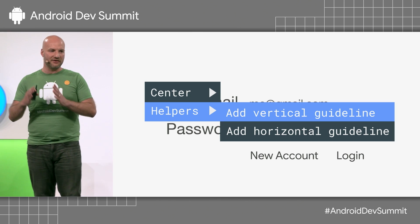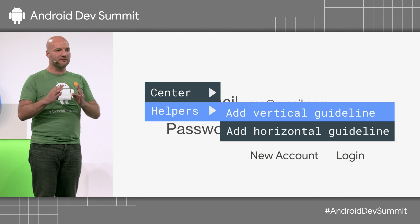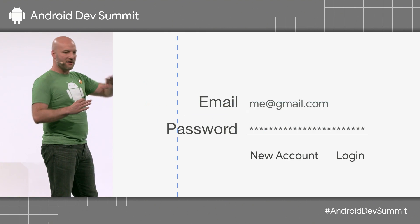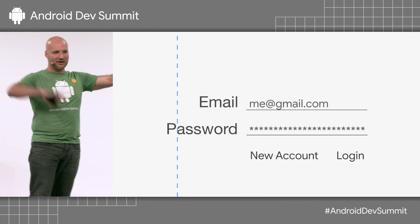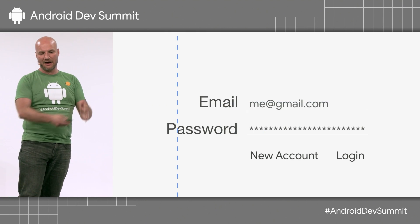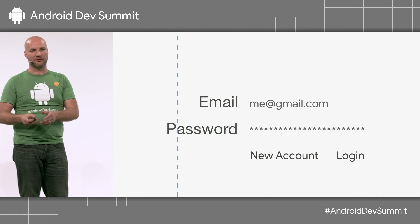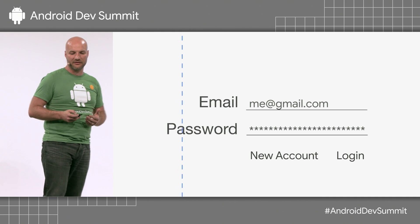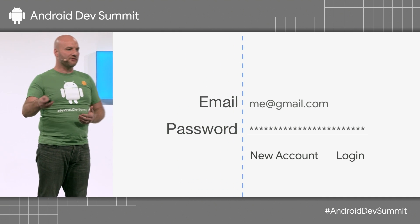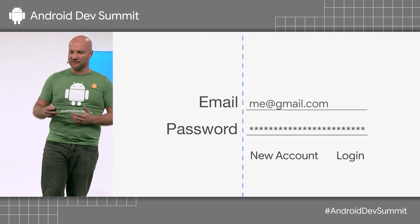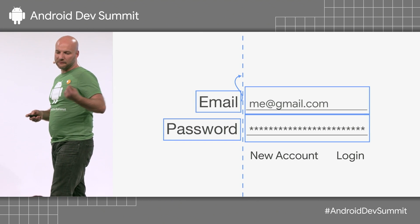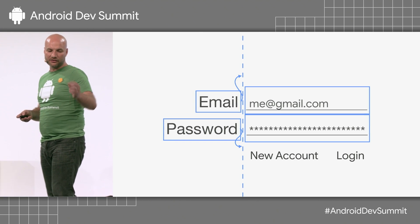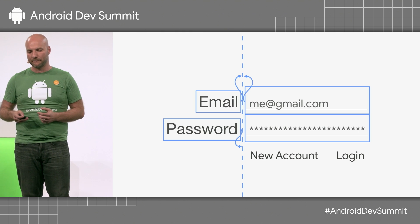A vertical guideline is basically a new edge of the screen. I have one on the left of the screen, one on the right of the screen, and now I've put an edge of the screen in the middle that I can use as an anchor for constraints. I'm going to move that to where I'd like it in my design, and then I can take those text views and create constraints from them to this guideline.